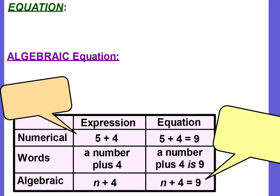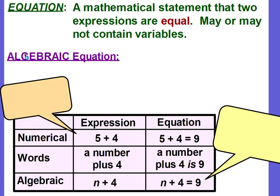So we know what an expression is. An expression is when you have numbers and operations. An algebraic expression will have numbers, operations, and variables. So what is an equation? An equation is a mathematical statement that two expressions are equal. It may or may not contain variables.